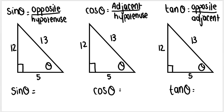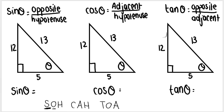Before we go on to 2D trigonometry — angle of elevation and depression — I need to make sure that you are reminded of your different trig ratios. We've got sin, cos, and tan. You need to remember — this is how I remember it — SOHCAHTOA. So sin is opposite over hypotenuse, cos is adjacent over hypotenuse, and tan is opposite over adjacent.